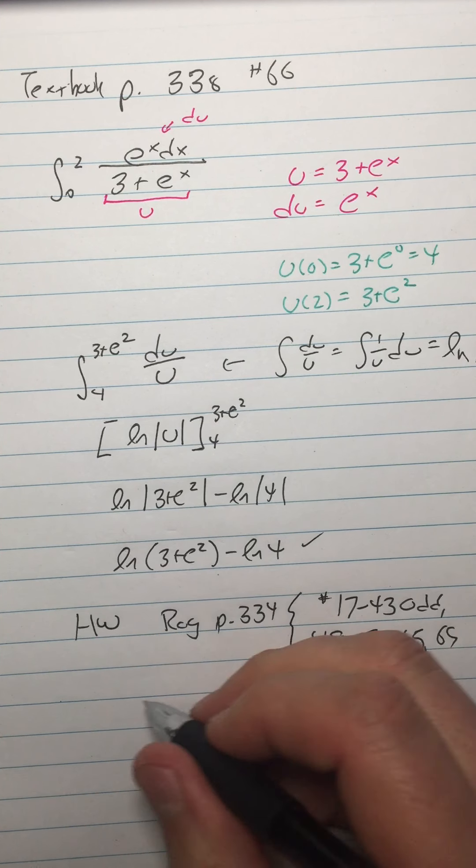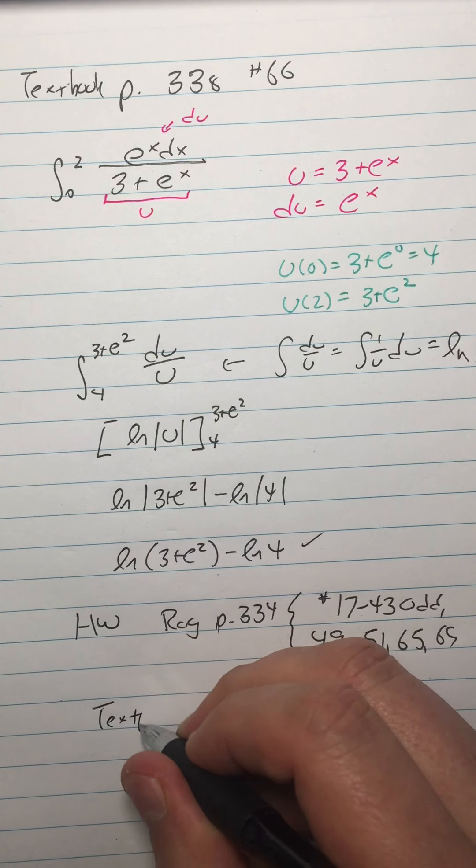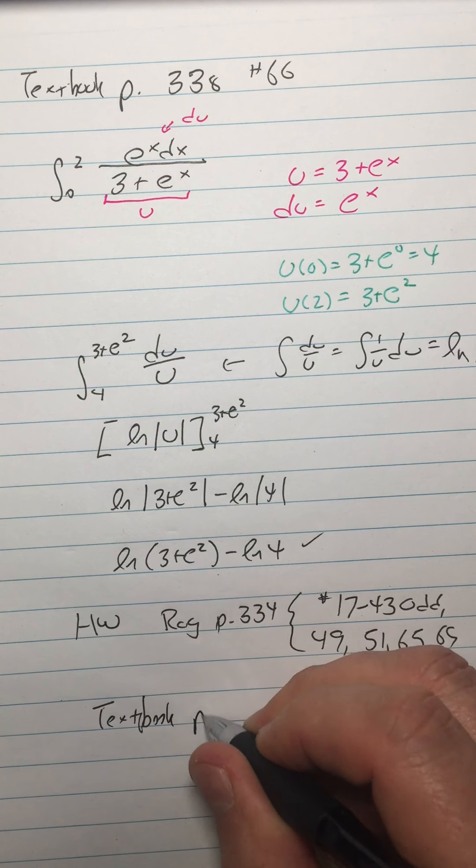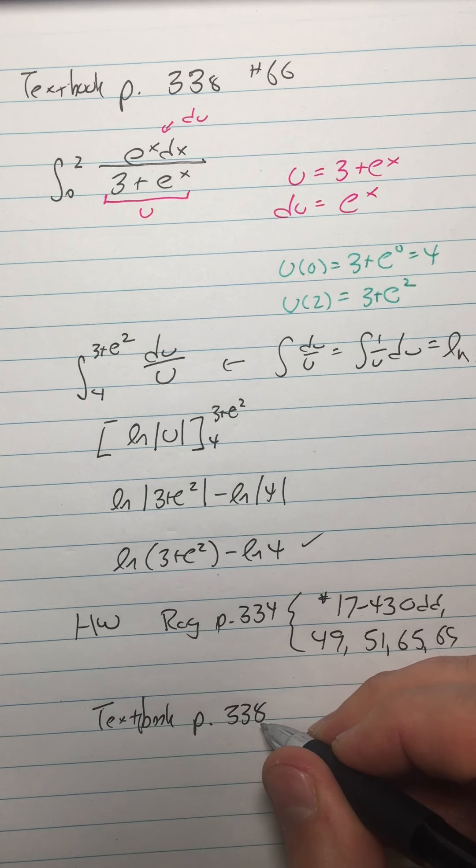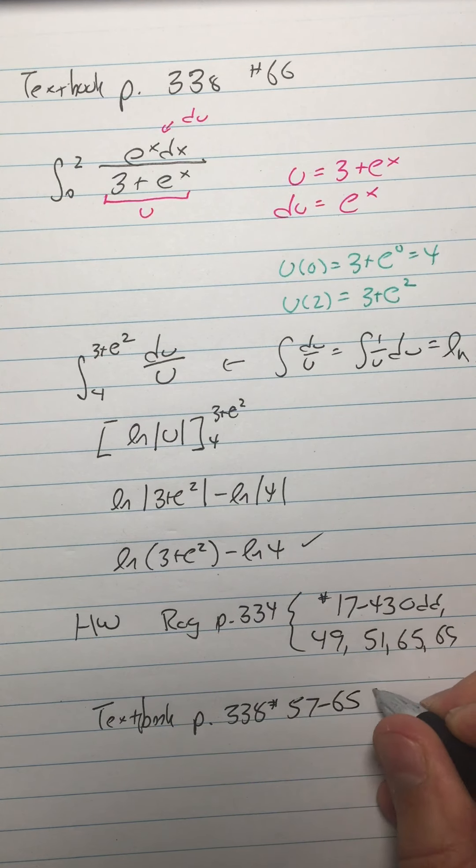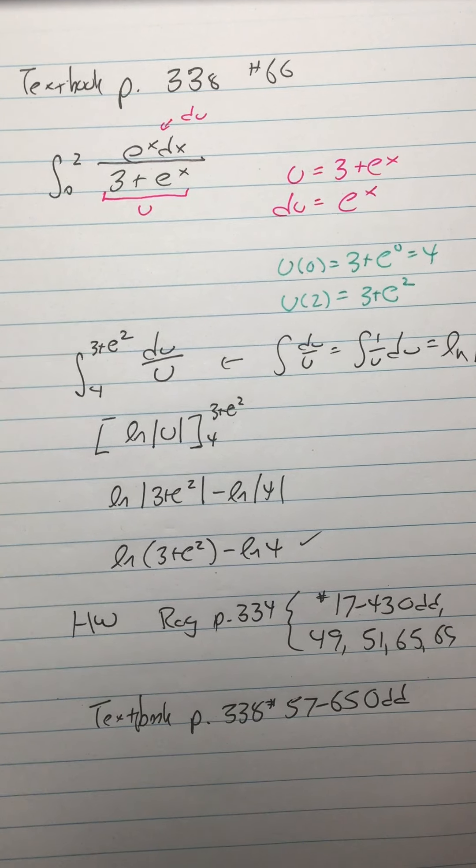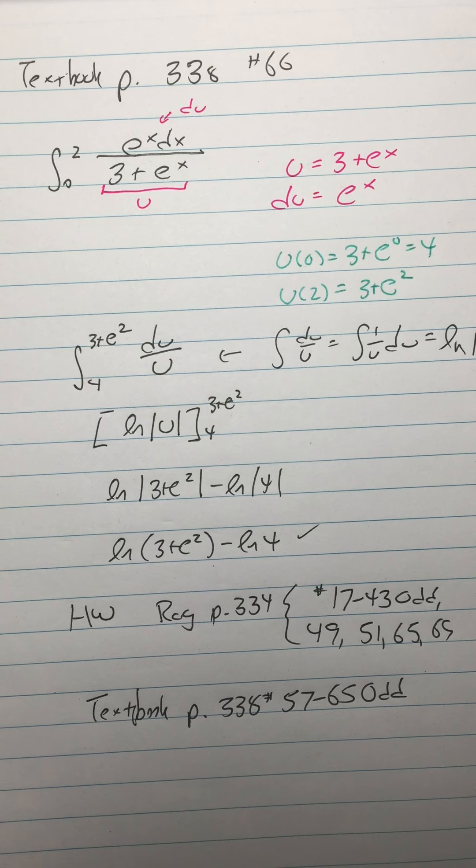And then also in your book, textbook page 338. We're going to do 57 through 65 odd. All right, there you go. That's the homework on this. Enjoy.